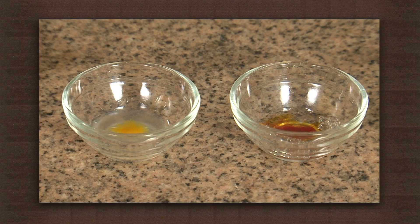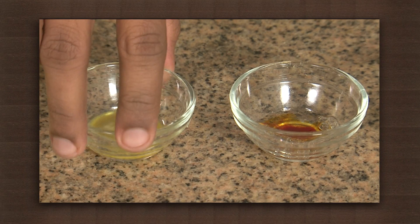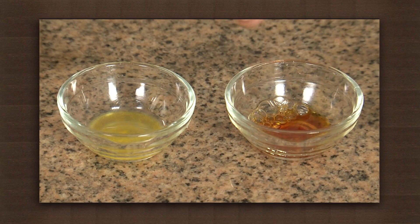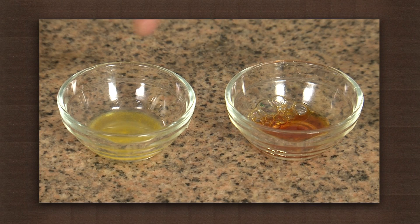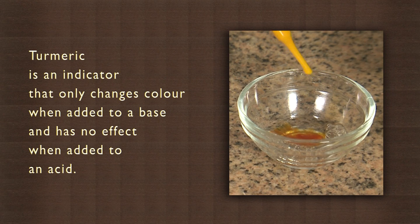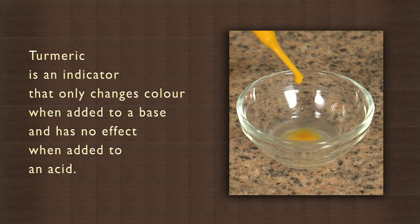Adding turmeric solution to soap water changes the color to red-orange. We see no change in the solution of lemon juice. Turmeric is an indicator that only changes color when added to a base and has no effect when added to acids.